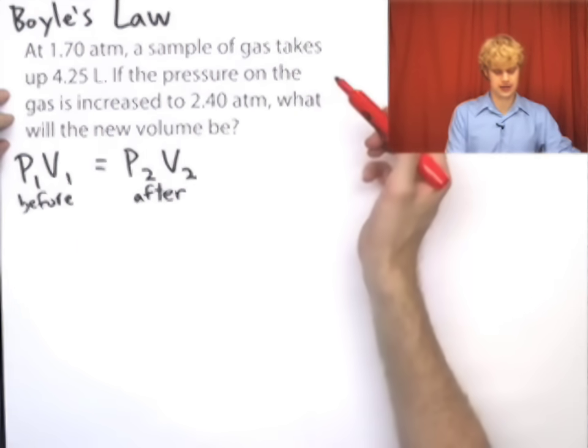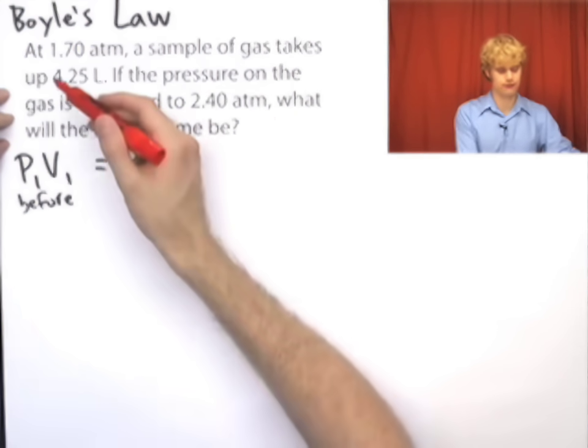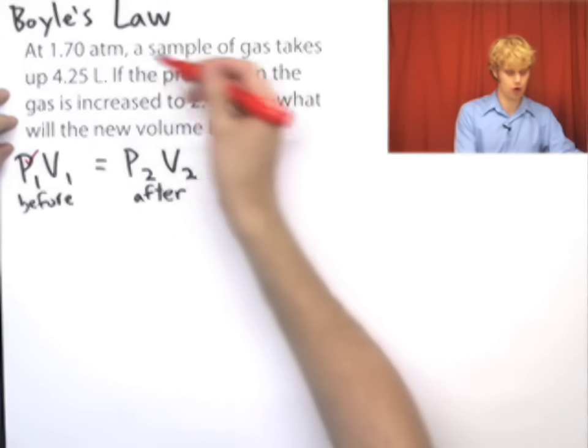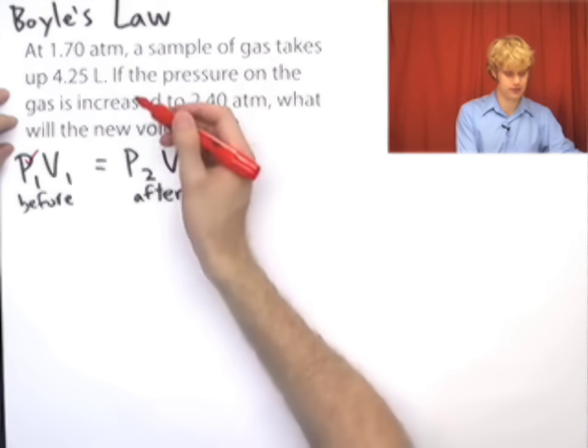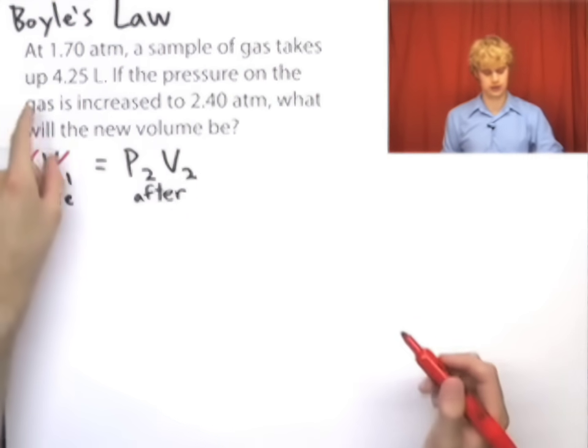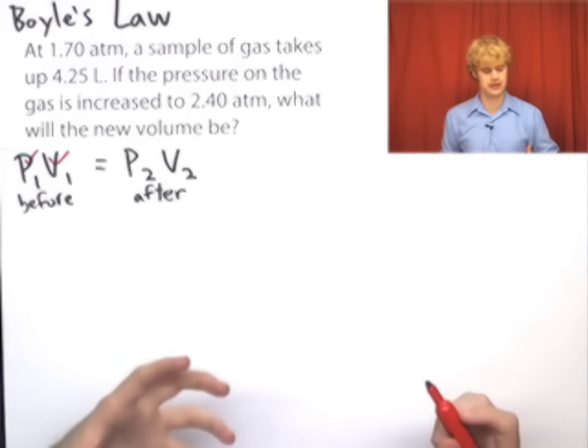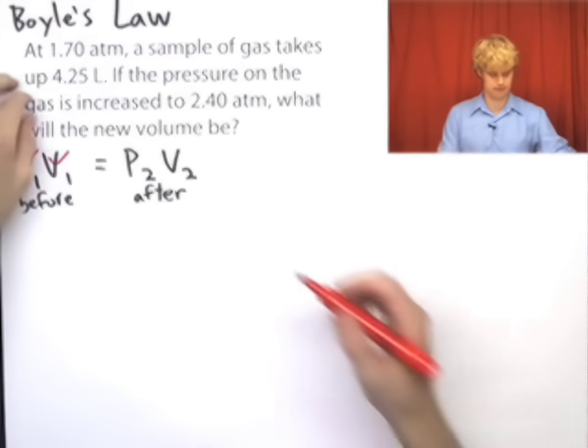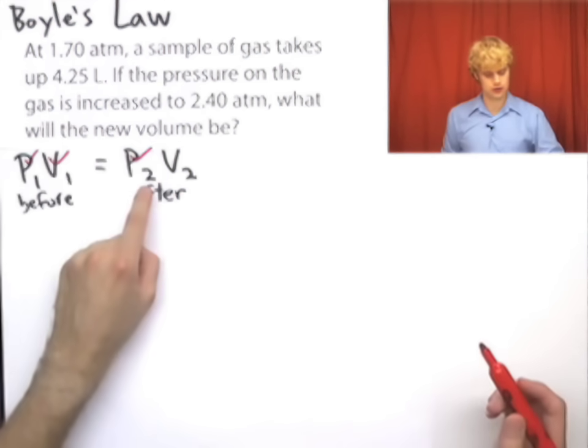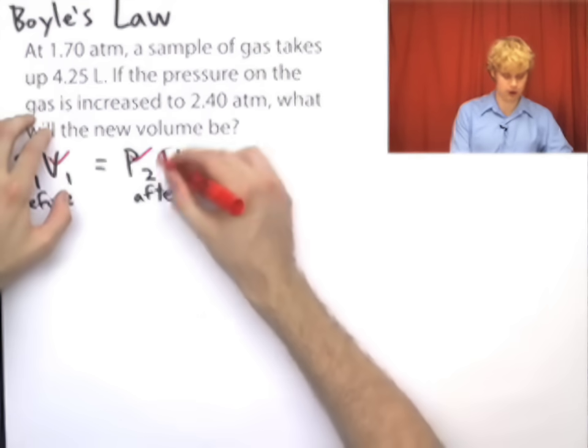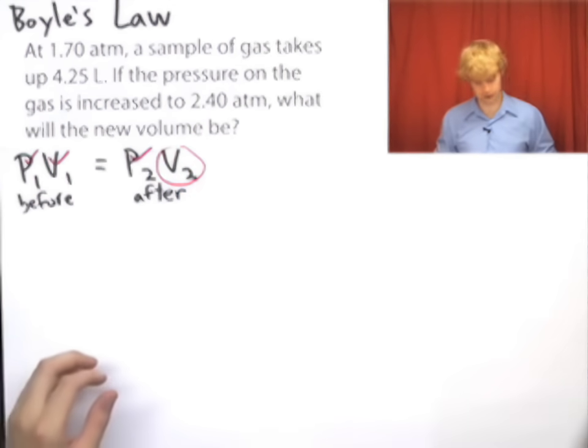At 1.7 atm, a sample of gas takes up 4.25 liters. So we have the before pressure, 1.70 atm, and we have the before volume, 4.25 liters. We now say if the pressure on the gas is increased to 2.4 atm, what will the new volume be? So we have P2, we have the second pressure after the change, we don't have the volume. So it's going to be V2 that we're going to be solving for.